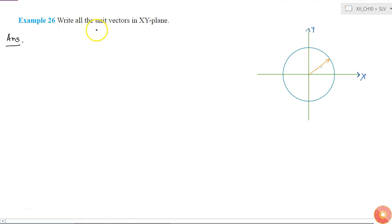The question says to write all the unit vectors in XY-plane. So let us assume that the unit vector is written as u equals x i cap plus y j cap. We know its magnitude is 1 because it's a unit vector, so x square plus y square equals 1. This is the equation of a circle.